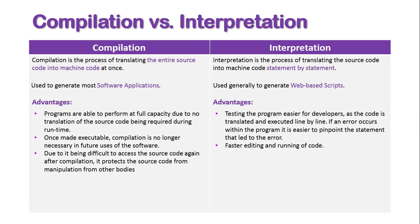The advantages of interpretation relate to testing the program, as it's easier for developers to look at the code as it's executed and translated line by line, pinpointing where an actual error would be and linking it to a specific statement in the source code. It also enables faster editing and running of code — once an error gets highlighted, you can go straight into that code, fix it up, and then interpret again, allowing you to resolve the issue at the time or change things on the fly to test edits.